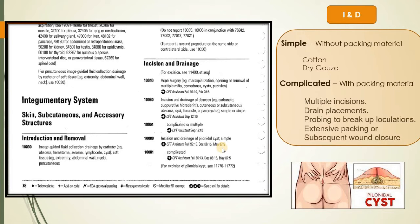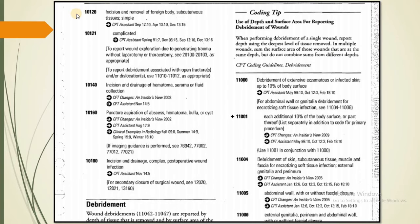So next see another code. Here you can see 10120, 10121. Then talking about these two codes. So description here you can read incision and removal of foreign body from subcutaneous tissue for simple. Then 10121 it's for complicated.